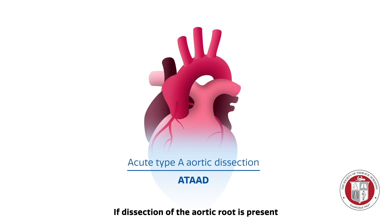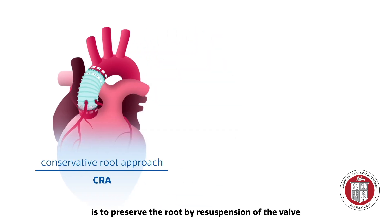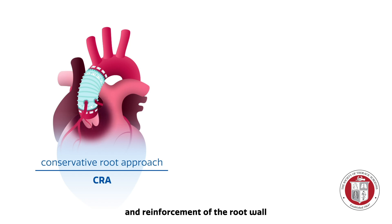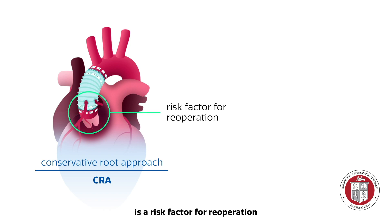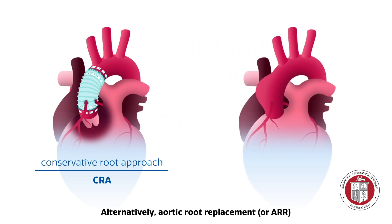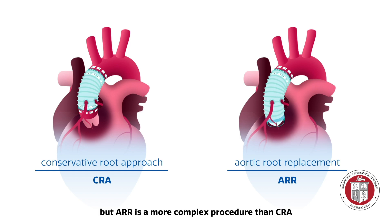If dissection of the aortic root is present, the conservative root approach, or CRA, is to preserve the root by resuspension of the valve and reinforcement of the root wall. However, preservation of the dissected aortic root is a risk factor for re-operation. Alternatively, aortic root replacement, or ARR, can be performed with valve preservation or replacement, but ARR is a more complex procedure than CRA.